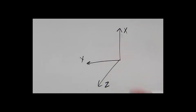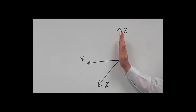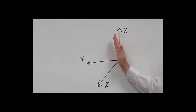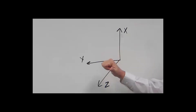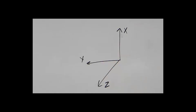Another way to think about it: if I take my hand and point it in the positive x direction, and then bend my fingers 90 degrees, they will now be pointing in the positive y direction, and my thumb is pointing in the positive z direction. So those are a couple of implementations of the right-hand rule.